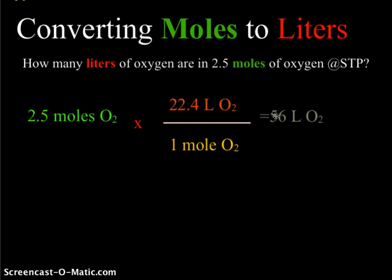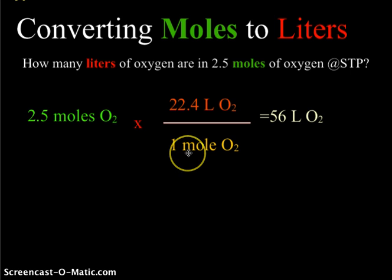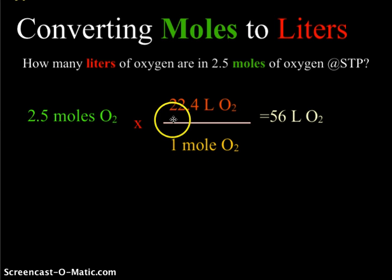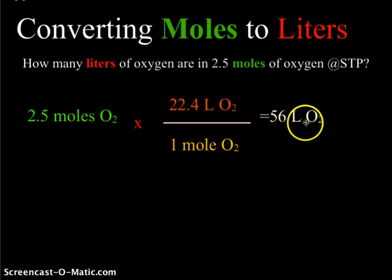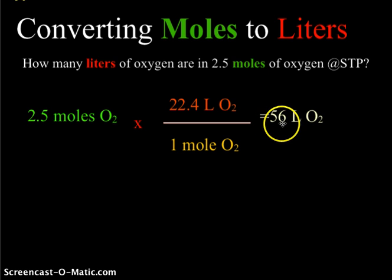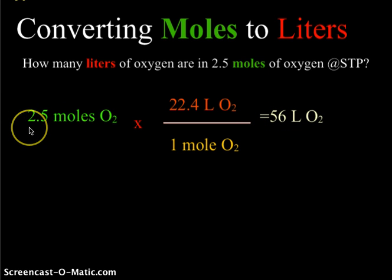When we do this calculation, moles cancel and we multiply 2.5 moles times 22.4 liters per mole. The mole unit cancels and we end up with 56 liters of O₂. That 56 has 2 significant digits, matching the original value of 2.5, which also has 2 significant digits.